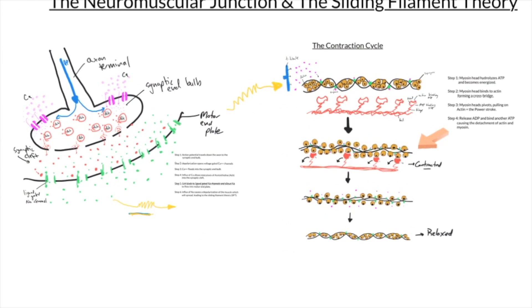We can zoom back out and put this all together to see the rate-limiting steps of the neuromuscular junction and the sliding filament theory. An action potential gives rise to the release of acetylcholine from the synaptic knob. That acetylcholine binds to the ligand-gated sodium channels on the motor end plate, flooding sodium into the muscle to depolarize the cell, allowing for calcium release from the T-tubule. That calcium binds to troponin, causing a conformational shift in tropomyosin, freeing up actin so that myosin and actin can stick together. The energizing of the hinge and power stroking of the head — the actin-myosin complex — gives us that contraction.